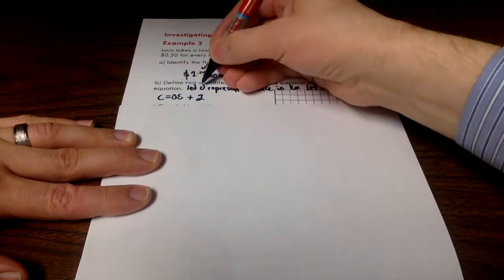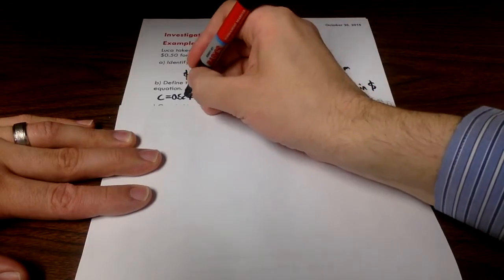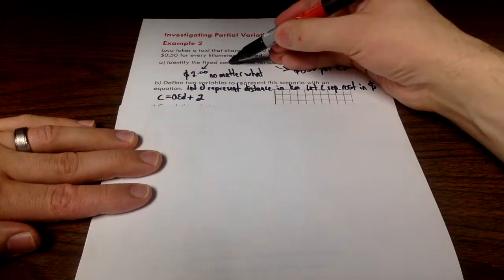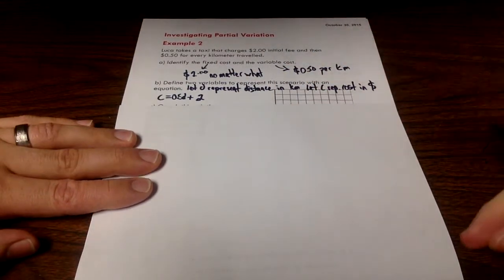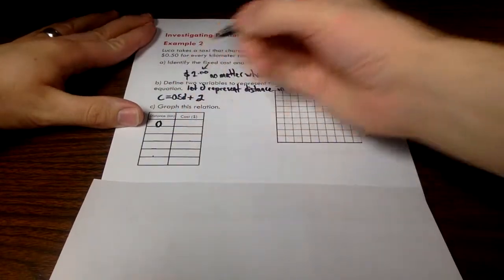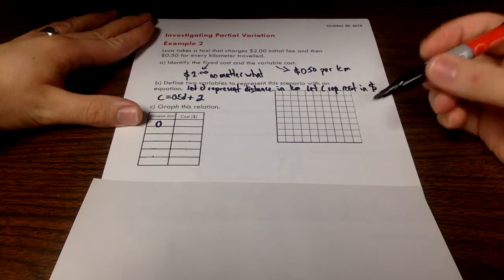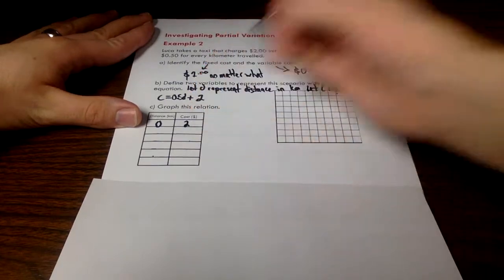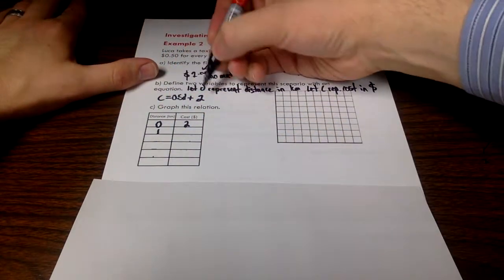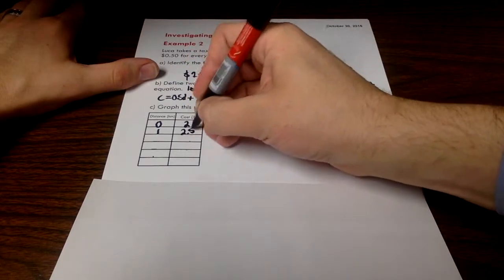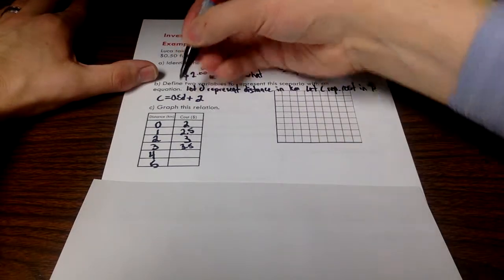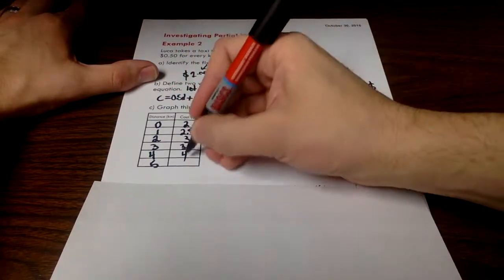We have this variable cost of 50 cents per kilometer. So I've got 50 cents per kilometer, I'm going to use my D variable. My cost is going to be 50 cents per kilometer plus my $2 that I have to pay no matter what. So we can model this scenario using that equation. I'm going to look at what happens if I travel zero kilometers. Remember in the last example we had $0, in this case we start with $2. Now let's look at what happens if I travel one kilometer. I've got 0.5 plus 2, it's just going to be 2.5, so two and a half dollars. As I increase my distance, I'm increasing by 0.5 dollars or 50 cents per kilometer.